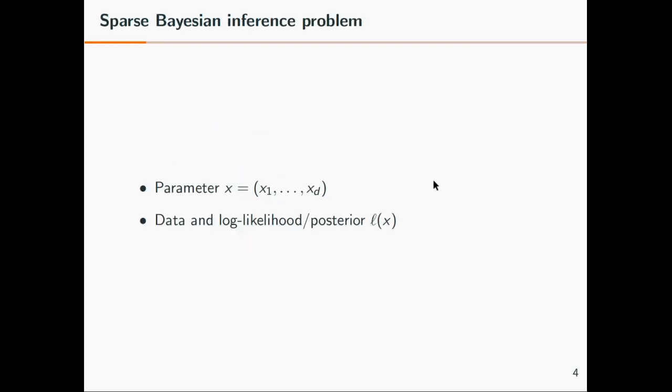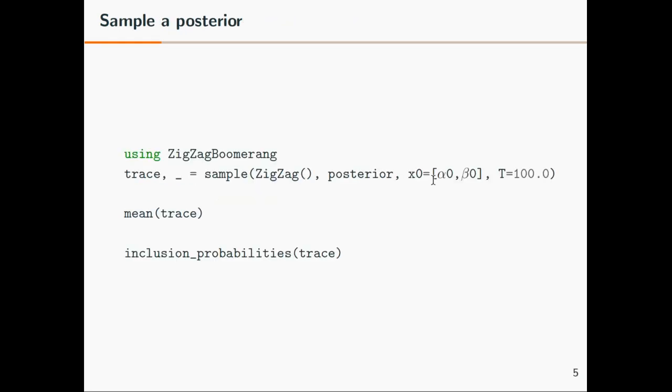The spike and slab just says that a priori there's a certain probability that the parameter alpha is zero, and a certain probability that it belongs to the model and is sampled from a normal distribution. You write down your posterior. I introduced some notation: x as a parameter, L(x) for the log likelihood or log posterior. You can then use our sampler to sample from that posterior, even with spike and slab priors. It samples exactly. You call mean(trace) to get the posterior mean from the samples, and as this is a variable selection problem you can also compute the inclusion probabilities. What's the probability that my parameter alpha or beta are not equal to zero?